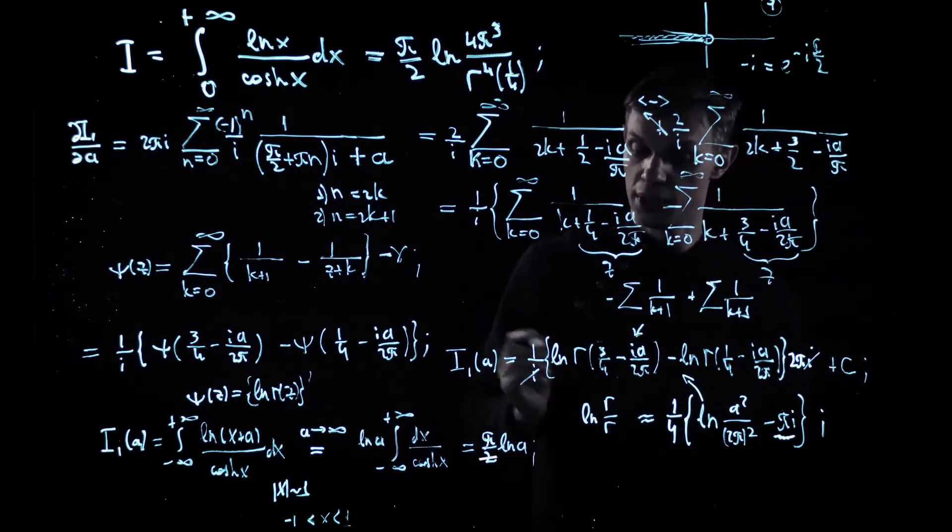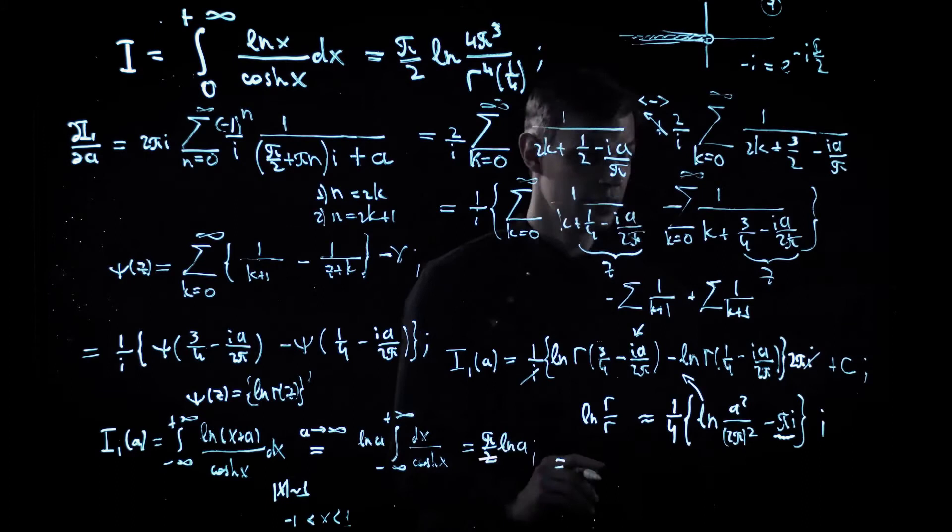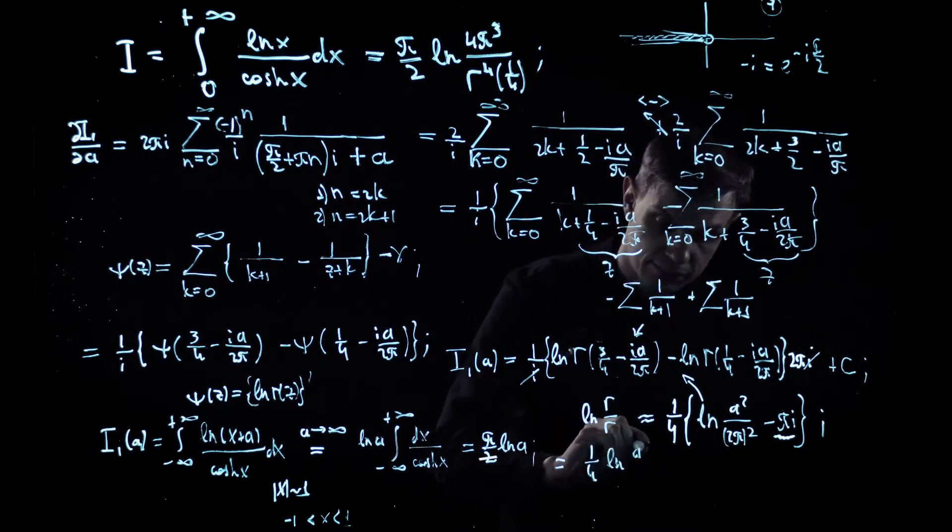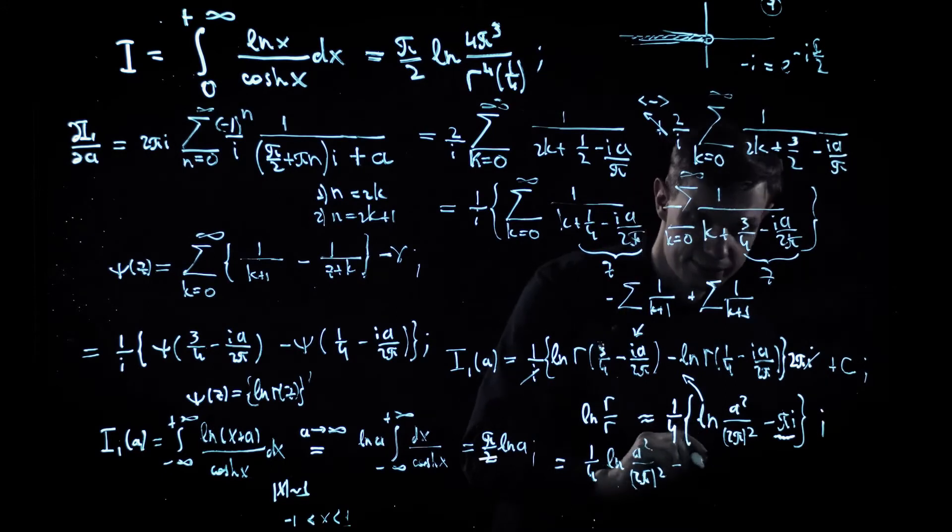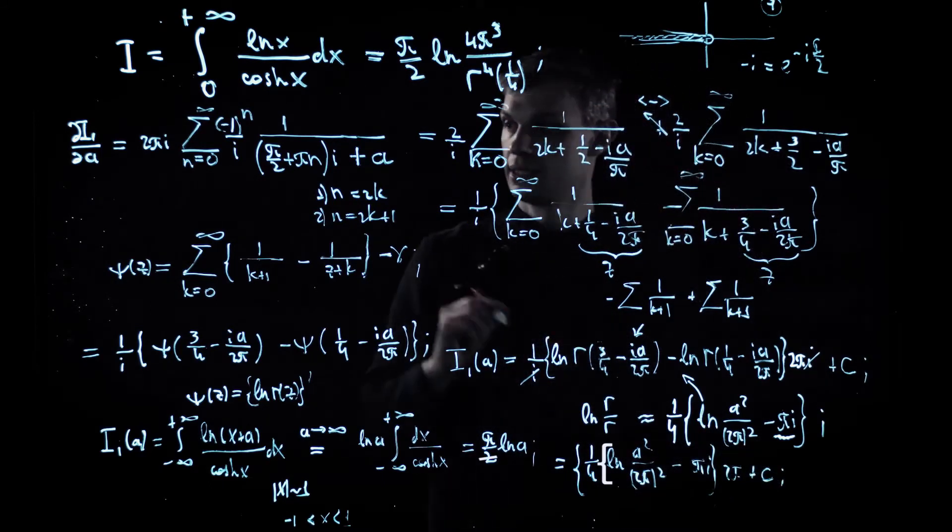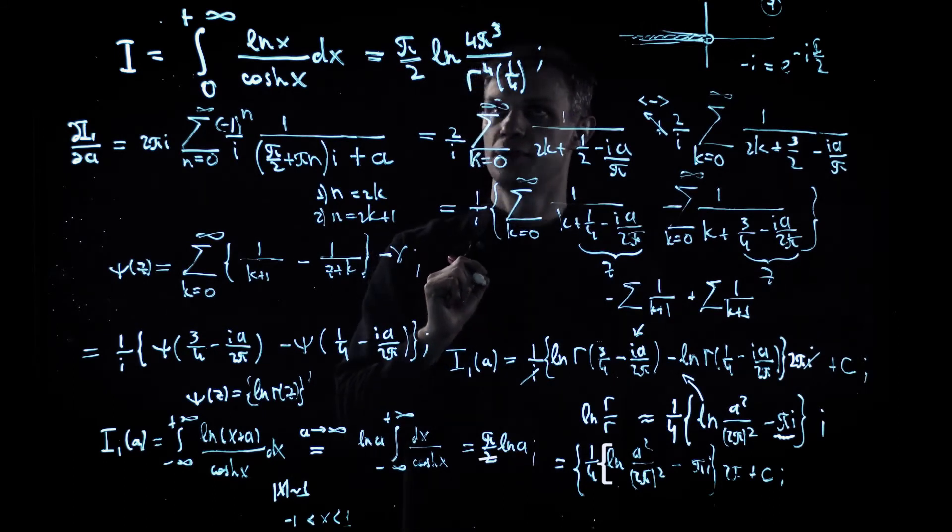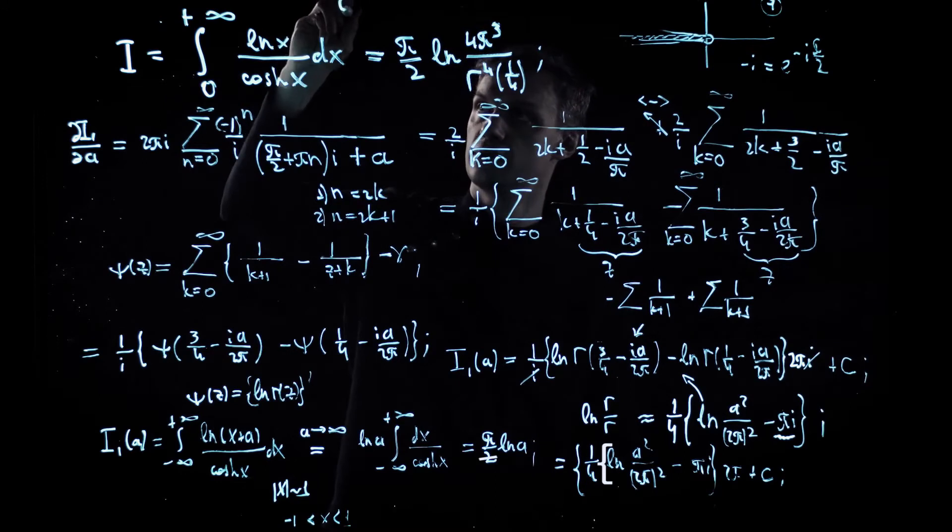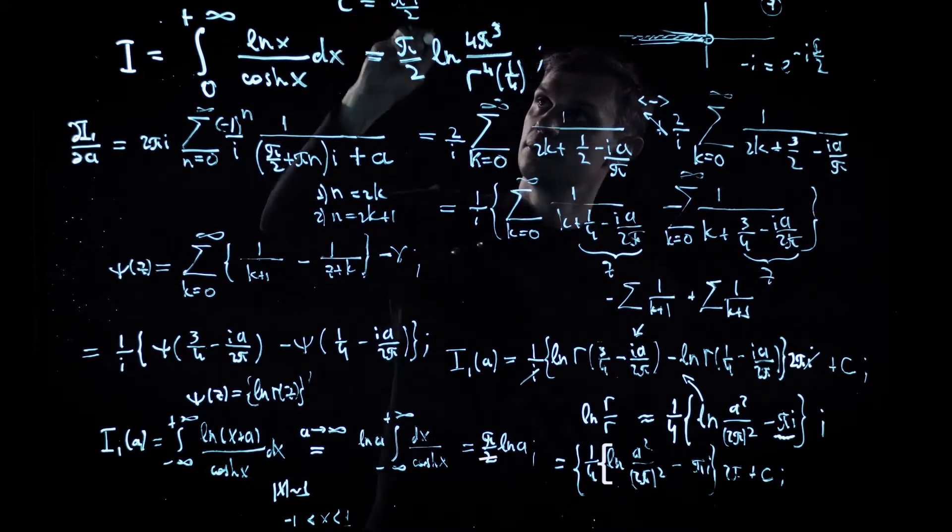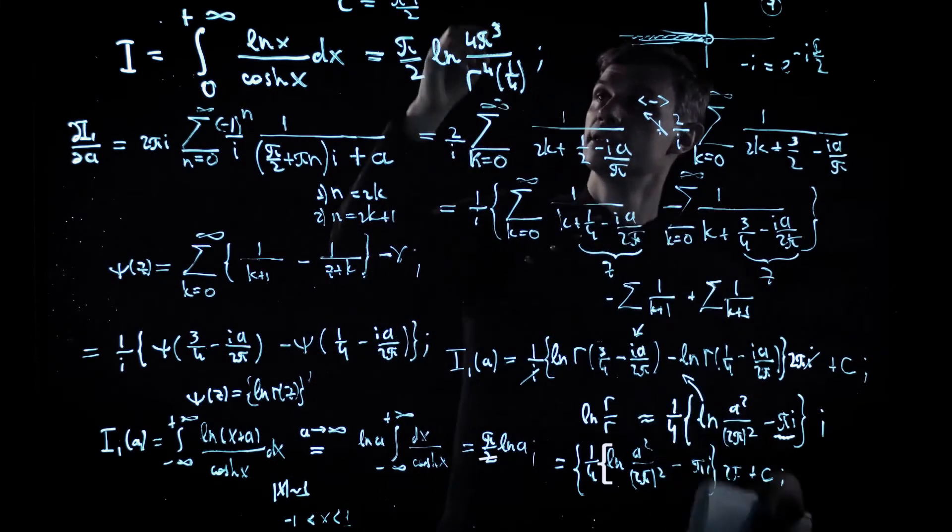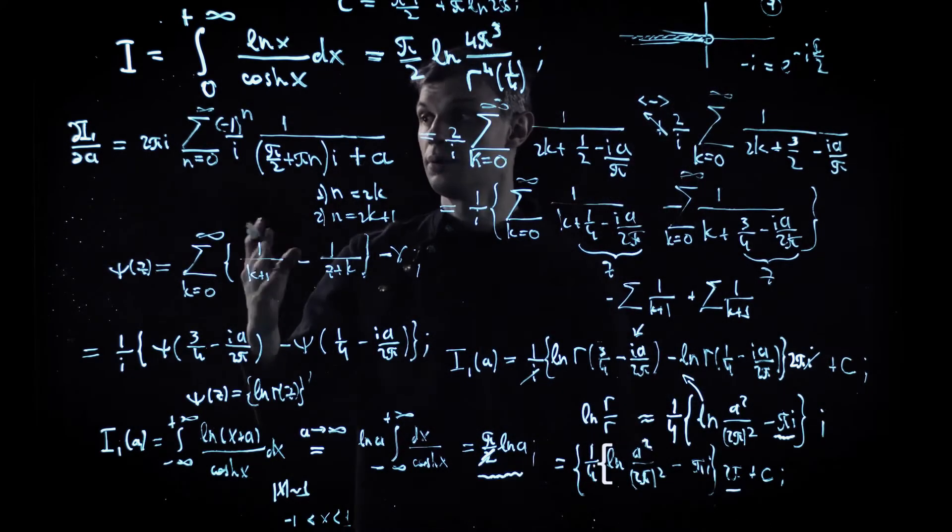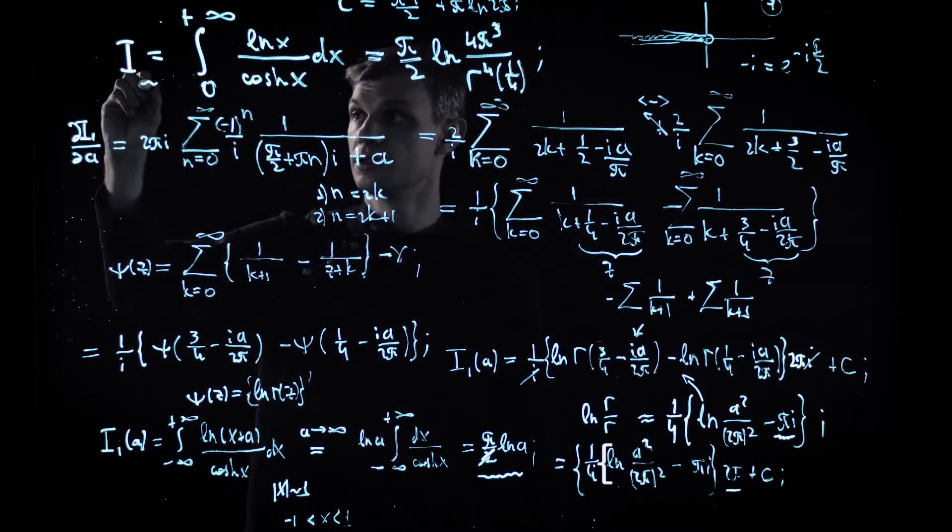And now we just plug this asymptotic into our I_1 expression and recover basically the correct value for our c constant. And as a result, the constant c is, let me write it somewhere above, the constant c is just, for reference, it's pi squared i by two plus pi logarithm of two pi. We are basically almost there. So now we are ready to get the original answer for our I integral.